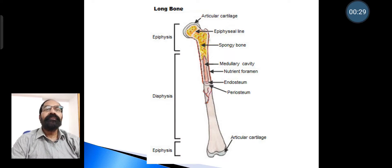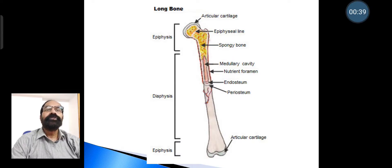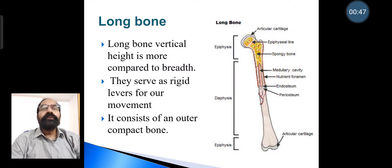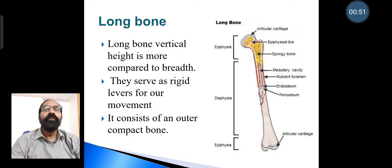You are seeing the picture of a long bone. It has a shaft, and at the ends of the shaft there are two ends called the epiphysis, while the middle part of the shaft is called the diaphysis. The long bone is vertical in height, more than its breadth.